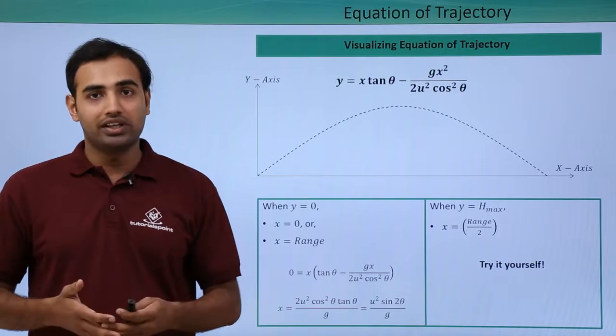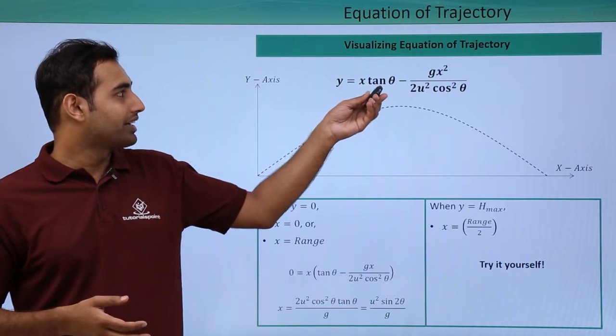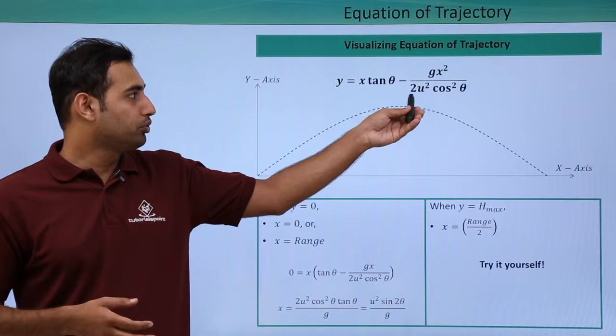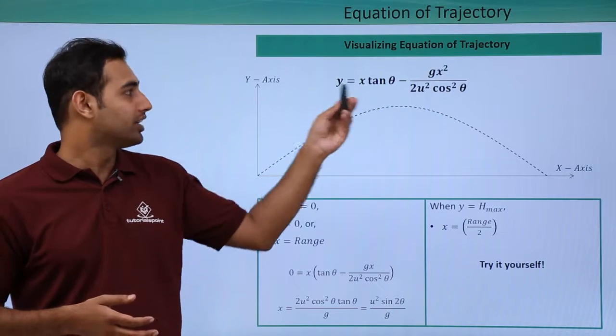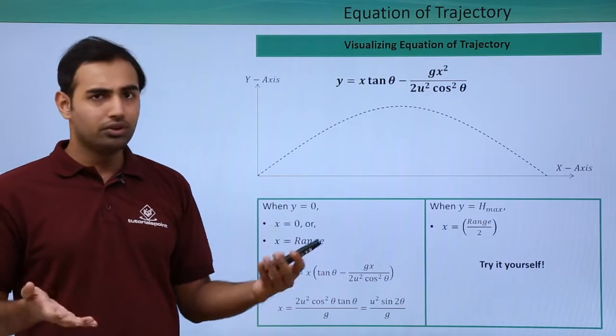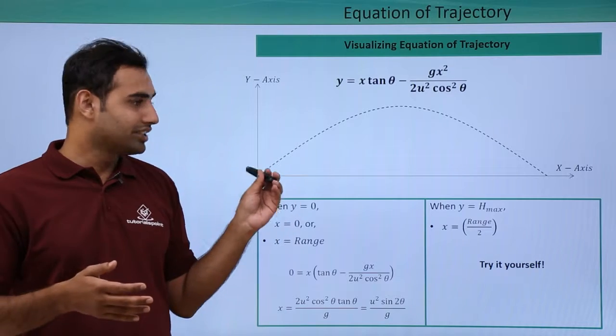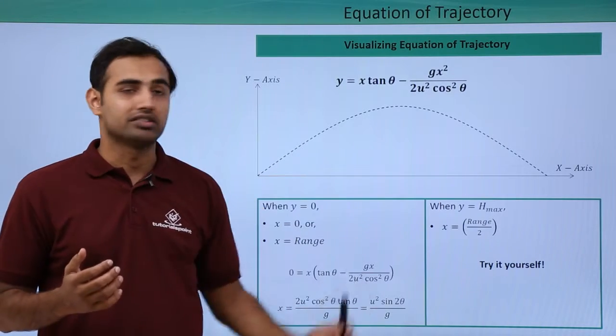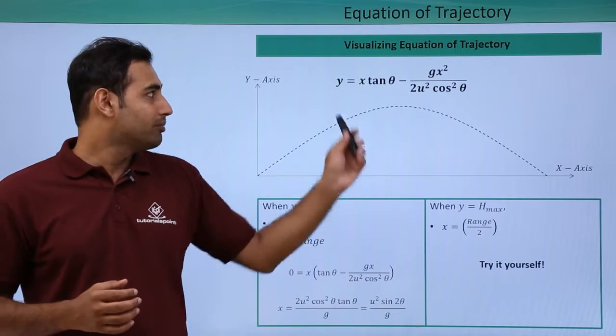Now let's try to visually analyze the same equation. So we have y is equal to x tan theta minus gx square upon 2u square cos square theta as our equation of trajectory. And we know that a typical trajectory of a projectile looks something like this, a parabola. Now you can see mathematically, one by one we will analyze.